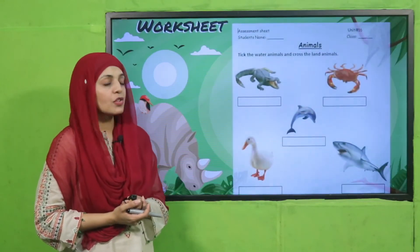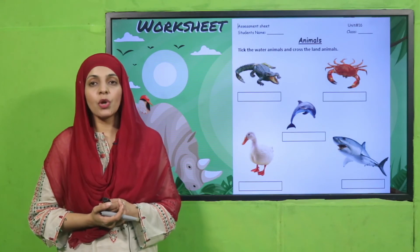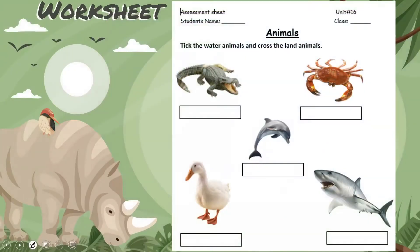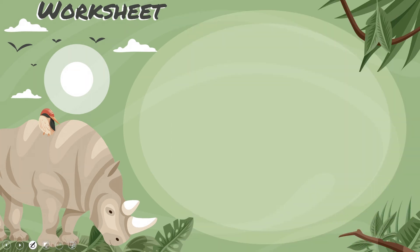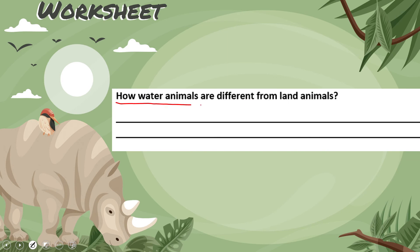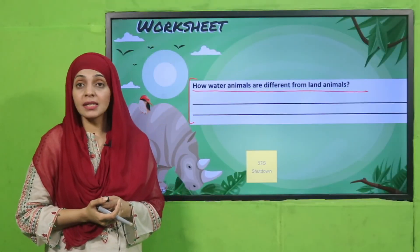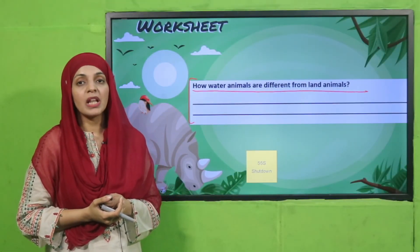For practice, you can download this worksheet from the description box below this video, or get it in print form from your teacher. Write down your name and class, then circle the water animal and cross the land animal. How are water animals different from land animals? Water animals have fins or tentacles for movement and gills for breathing. Land animals have legs and breathe through their lungs.